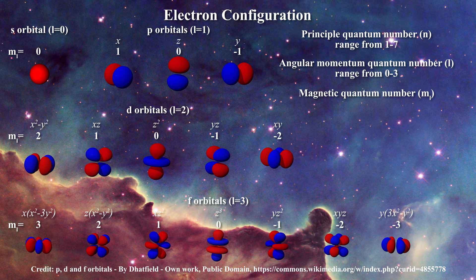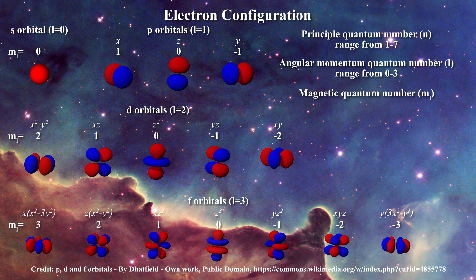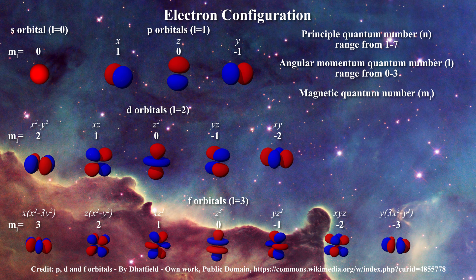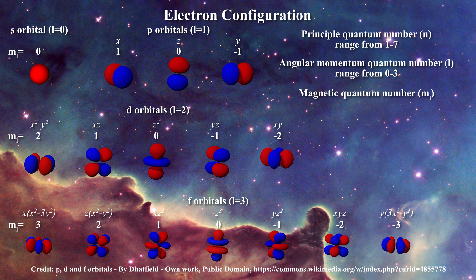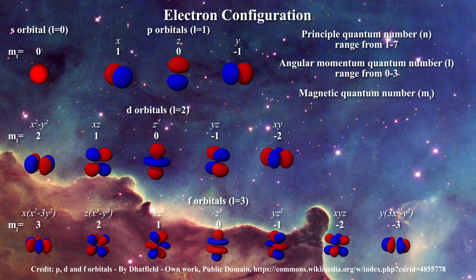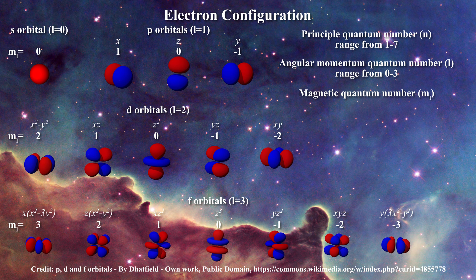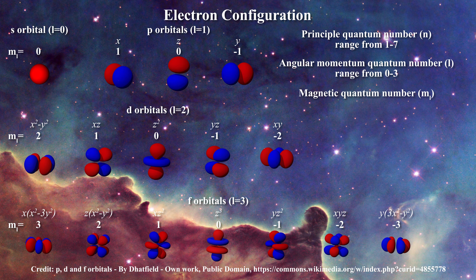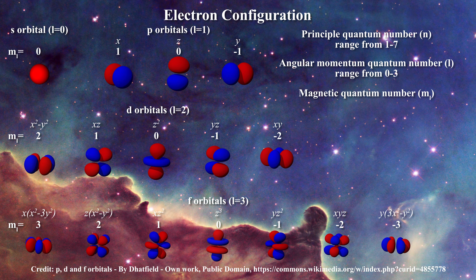For each orbital, each geometric representation is associated with a particular magnetic quantum number and both are therefore presented. Note that the s orbital is spherically symmetric; it has an orbital angular quantum number equal to zero and its magnetic quantum number is therefore also equal to zero. There are three p orbitals arranged relative to the x, z and y axes with magnetic quantum numbers of one, zero and minus one respectively. The p orbitals each possess two lobes separated by a nodal plane exactly at their center — the position of the nucleus.